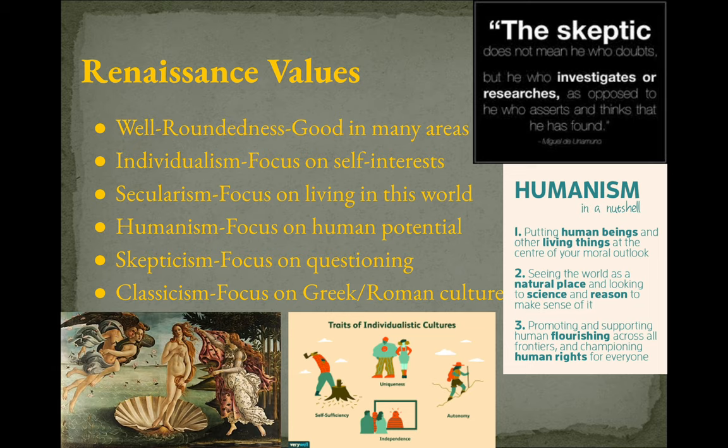The first value is well-roundedness, meaning you're good in many different areas. This is what we do with our school system today — why do we have you doing science, art, math, history, and English? Because we want you to have a solid foundation in many things. We don't expect you to be an expert in everything, but we do expect you to be well-rounded.